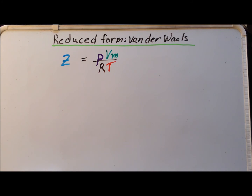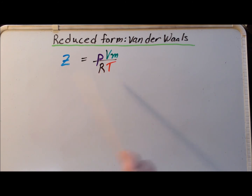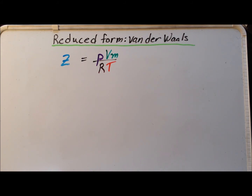Now for the second part of the video. We recall that the compression factor z is defined as the pressure times the molar volume divided by R times the temperature. For the ideal or perfect gas, the compression factor z is identically 1. We are going to derive the value for the van der Waals gas — specifically, the compression factor at the critical temperature, pressure, and volume, known as the critical compression factor z sub c.